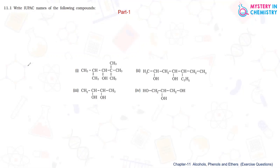Here in question number 11.1, write IUPAC names of the following compounds. So first compound is given here. First of all, we have to remember that select the longest carbon chain containing the functional group.